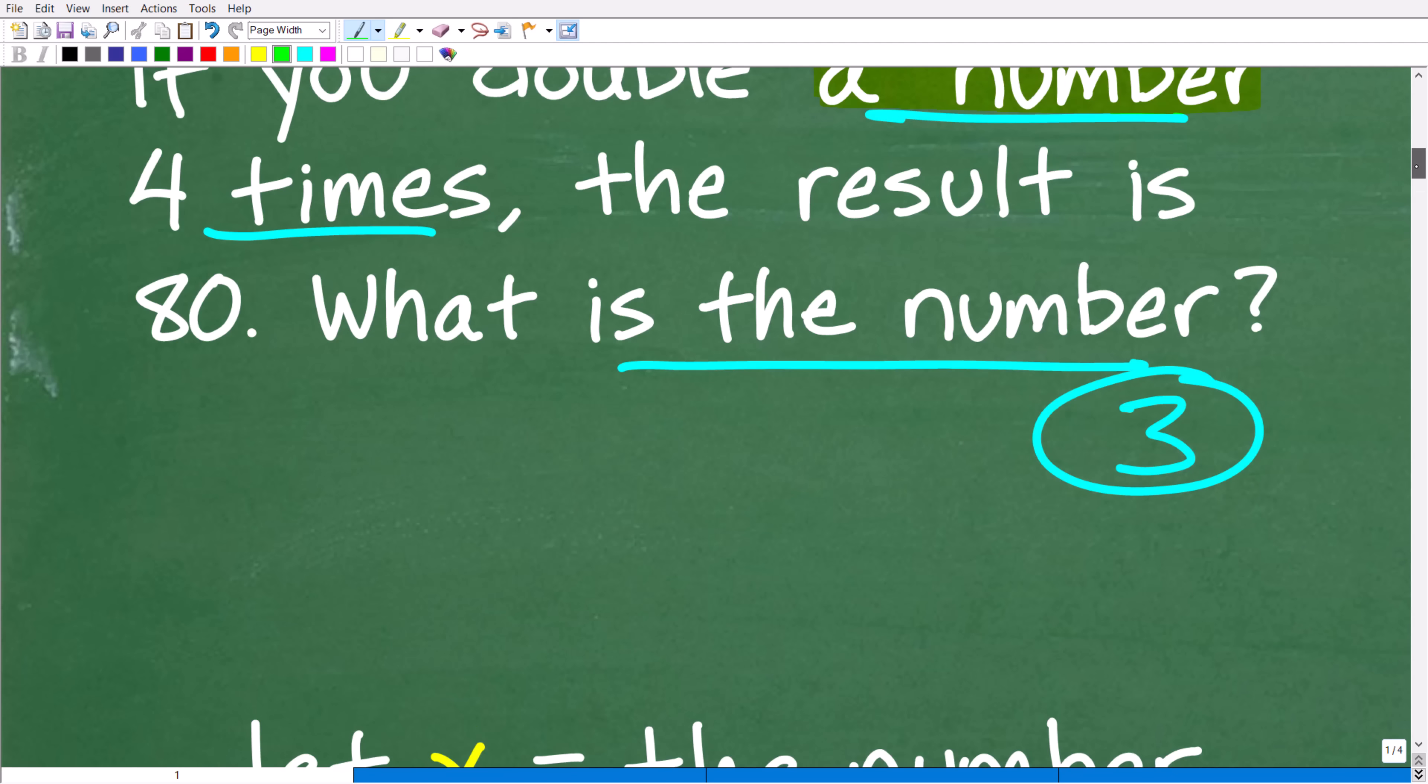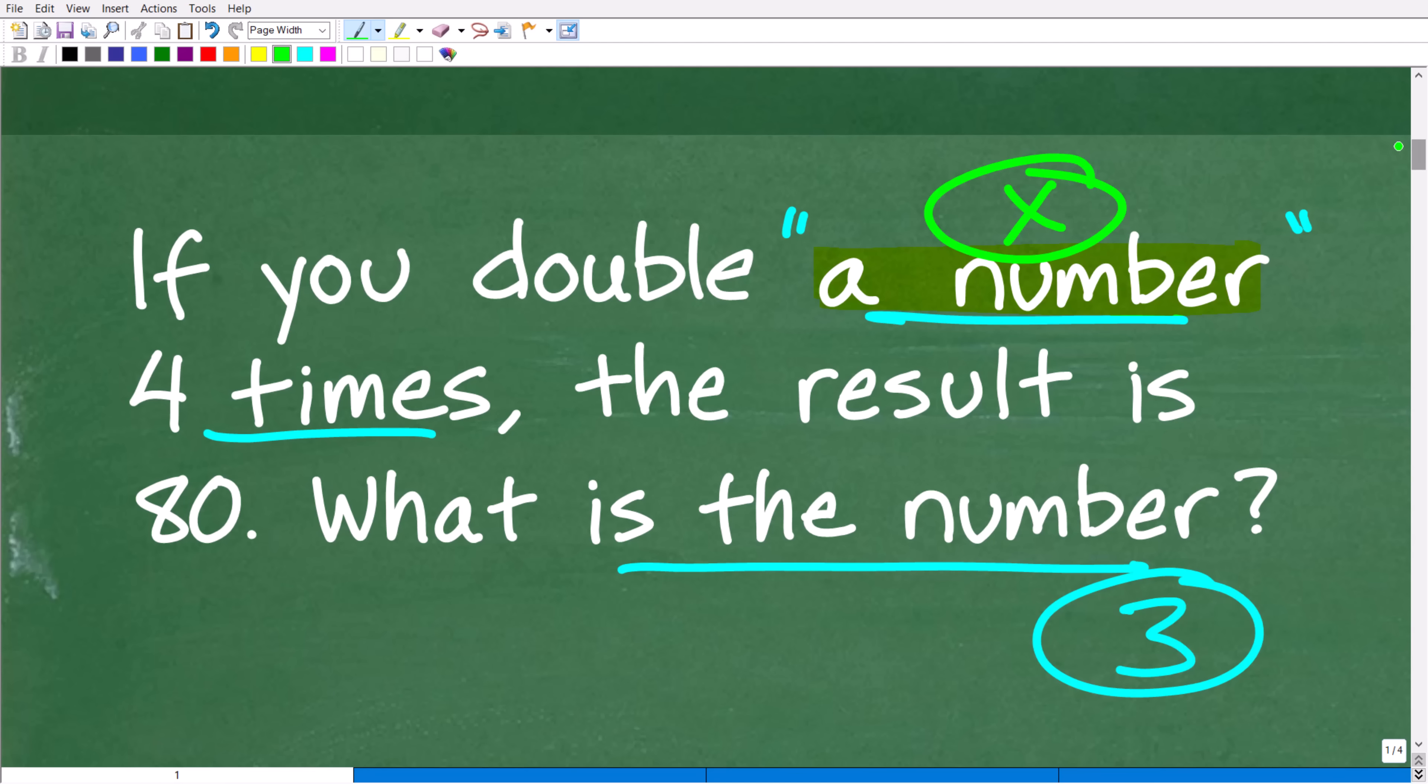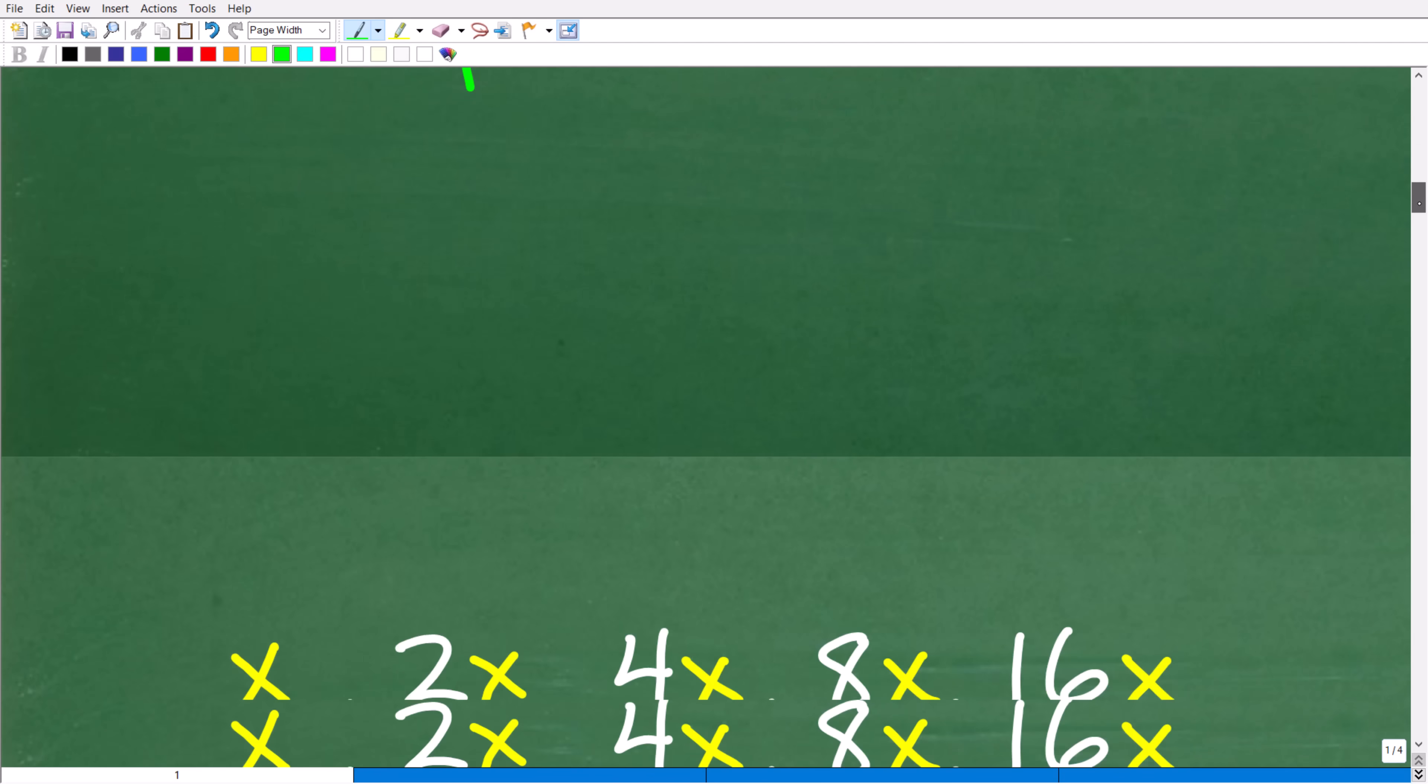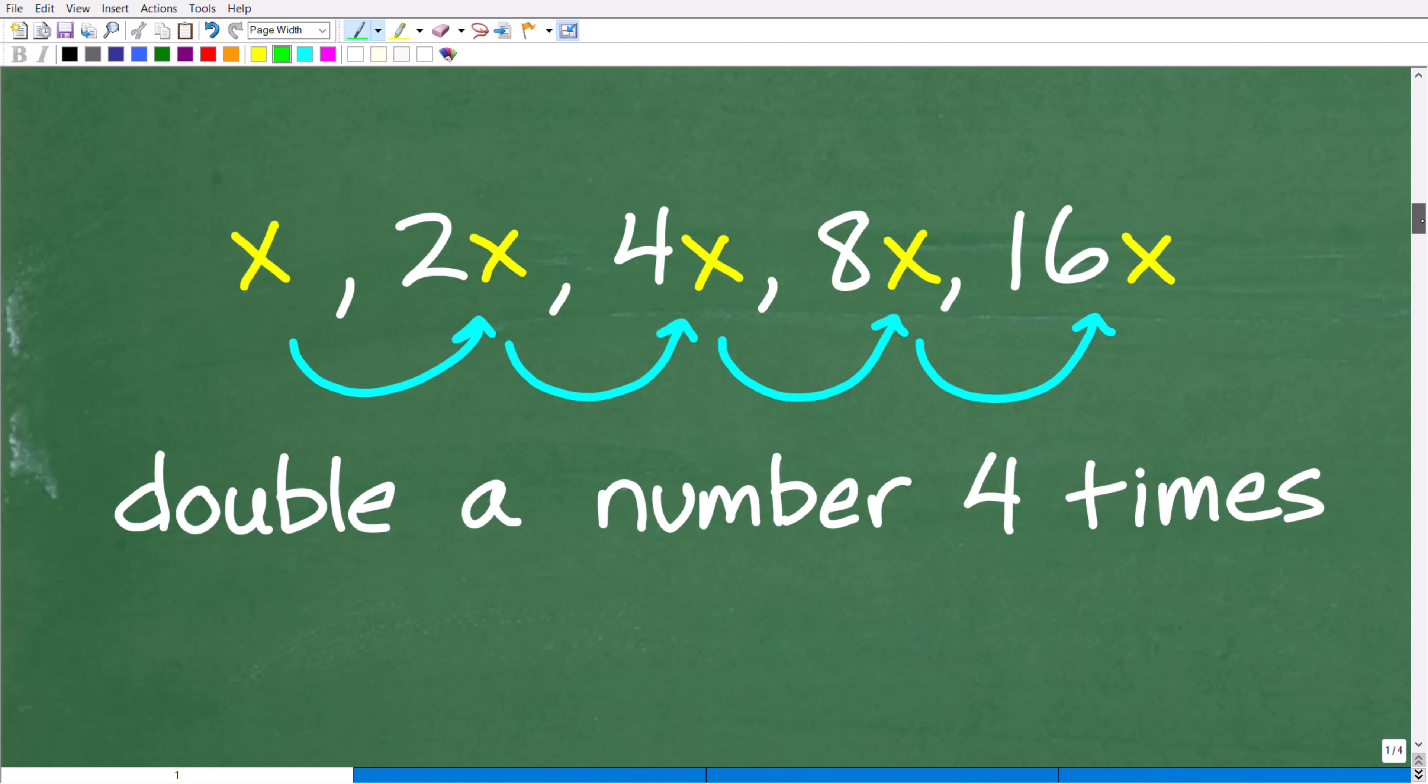All right, so this is what our variable is going to be equal to. Now, we have to think about this problem. If we have this number, and we're going to call that number x, we're going to double this number four times. So, what does that look like? Well, let's go ahead and double this number four times right now. So, here is our number x. If we double this number one time...